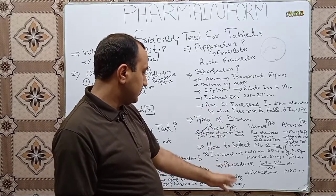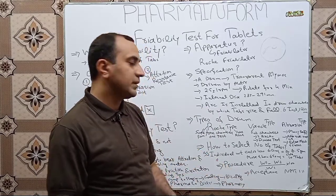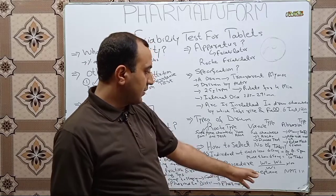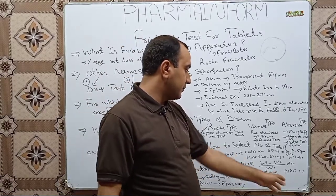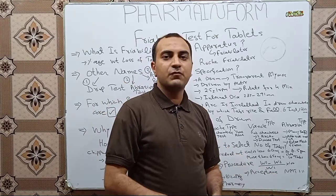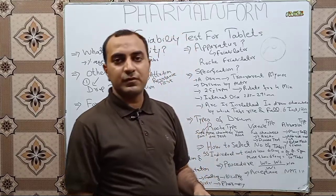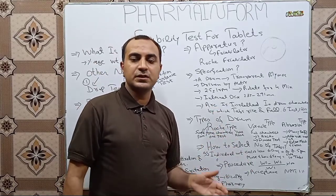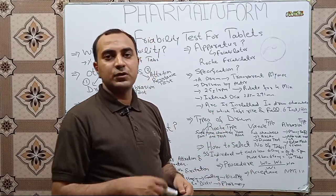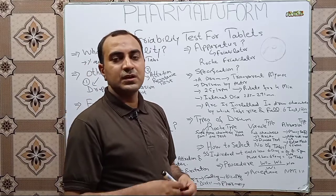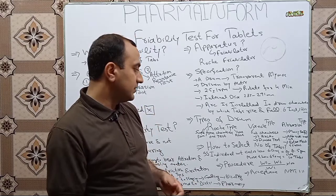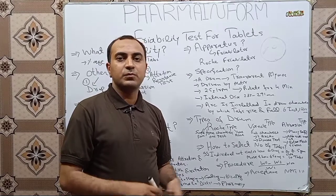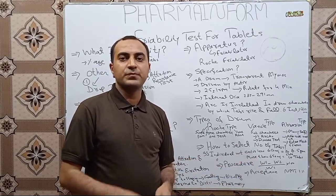Regarding acceptance criteria, the friability test is considered passed if the friability value is not more than 1%. If our values are less than 1%, we consider the test passed and continue the compression operation, and subsequent processes such as coating and blistering are continued because our friability is within acceptable limits.